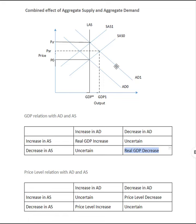It is difficult to ascertain the outcome when one increases and the other decreases. It totally depends on the magnitude of aggregate demand or aggregate supply by which they are increasing or decreasing. So when aggregate demand decreases and aggregate supply increases, or vice versa, the result is uncertain and depends on magnitude.